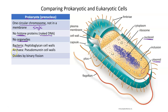Bacteria and archaea, which are both prokaryotes, are going to have a cell wall. There is also a capsule on the outside of the cell wall. The cell wall in a prokaryote is either peptidoglycan, which is found in true bacteria, or pseudomerin, which is the cell wall composition found in archaea. There are some differences between bacteria and archaea that we'll cover in future videos, but for this overview both can be considered prokaryotes, though they differ in cell wall composition and internal anatomy.